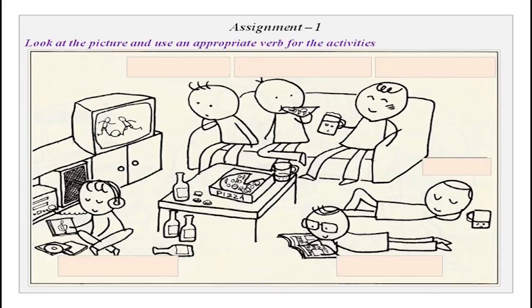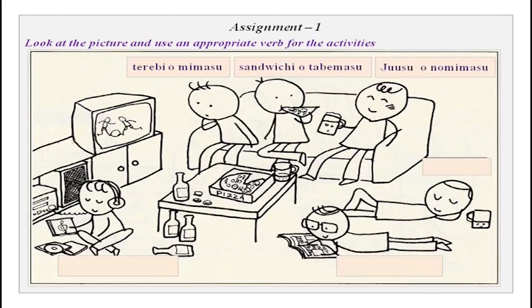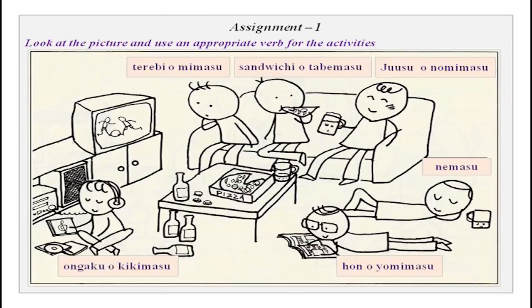The first assignment is: look at the picture and tell what they are doing. This practice is for verbs. We can call them Tanaka-san or Rao-san. Terebi wo mimasu, sandoitchi wo tabemasu, juusu wo nomimasu, nemasu, hon wo yomimasu, and in the end we have ongaku wo kikimasu. This was practiced in present tense of verbs.